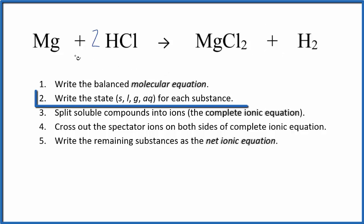Next we need to write the state for each substance here in the reaction. Magnesium, that's a metal, it's going to be a solid. Strong acids like HCl, they are usually aqueous. That means our magnesium chloride will be aqueous, dissolved in water. And then H2, you should recognize that as a gas.